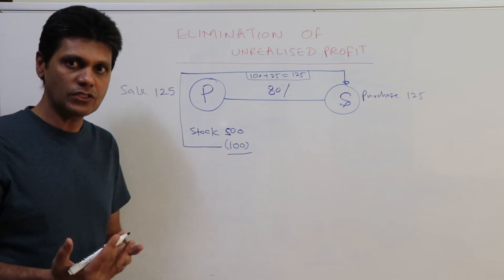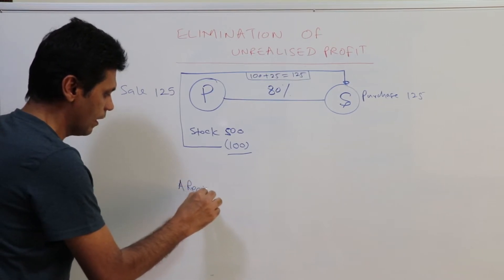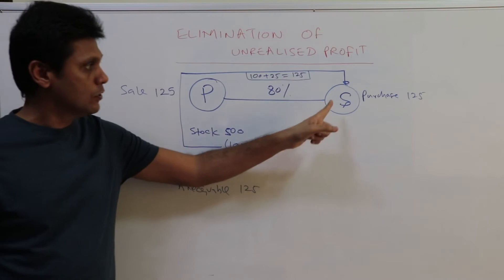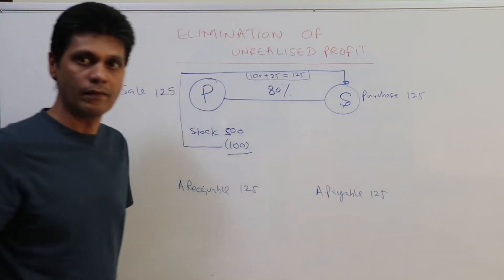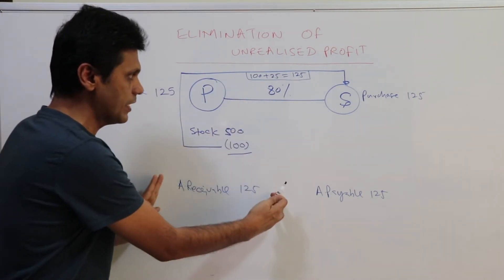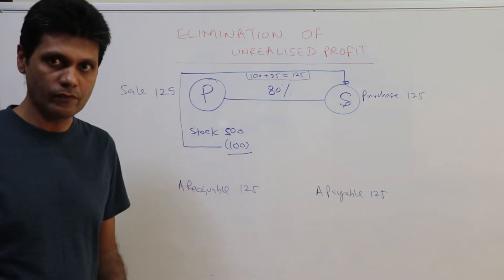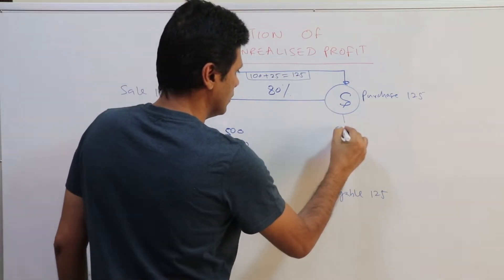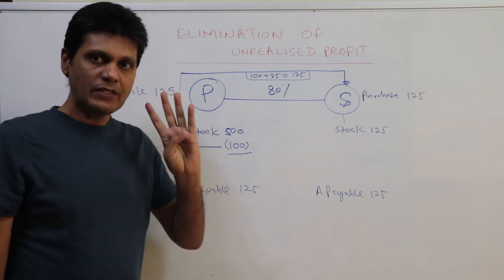Let's assume it's a credit transaction. Therefore in their balance sheet there will be an accounts receivable balance of $125 from S company. S company will have an accounts payable balance of $125. These are the receivables and payables as far as the separate financial statements are concerned. S will also have stocks worth $125.